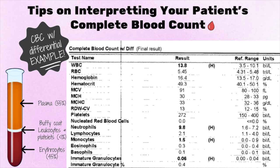Lymphocytes generally make up about 30 to 45% of white blood cells and are often increased in viral infections — for example, infectious mononucleosis, HIV, influenza, and hepatitis. One bacterial infection that can cause lymphocytosis, or an elevated lymphocyte count, is pertussis, also known as whooping cough. Leukemias and lymphomas have also been associated with elevated lymphocytes.